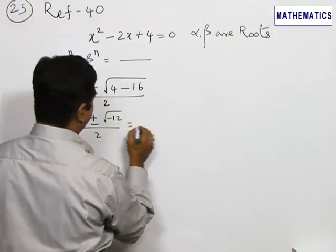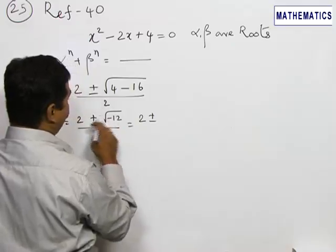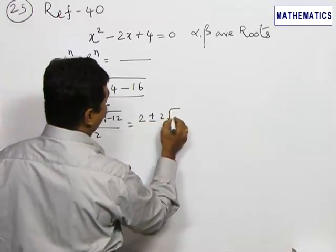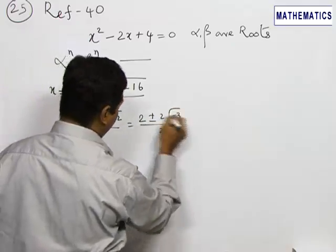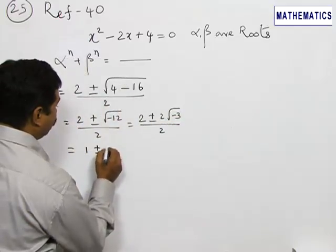If I take 2 plus or minus √(4×3), 4 can be written as 2 into root of -3 by 2. Together if I cancel 2, it will be 1 ± √3i.